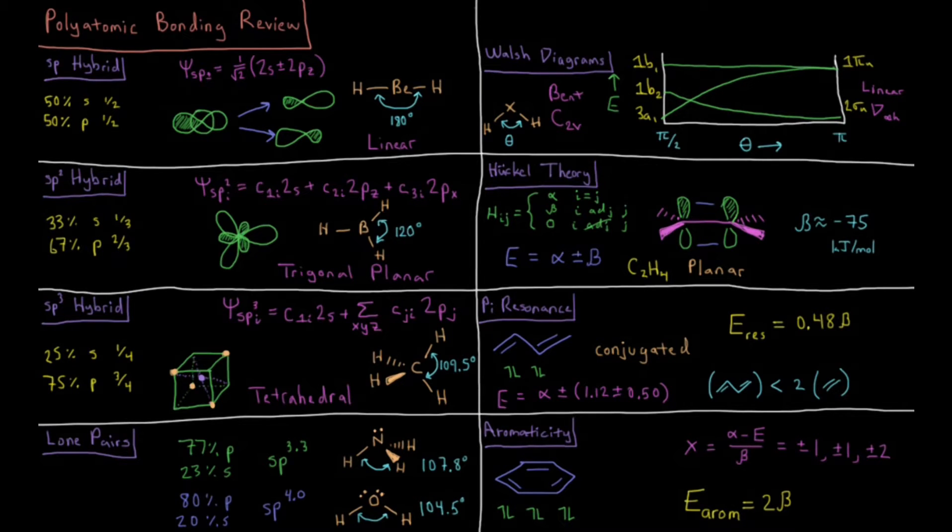This video is a review of the polyatomic bonding chapter in the quantum chemistry playlist. We start off with hybrid orbitals, beginning with sp hybrid orbitals.